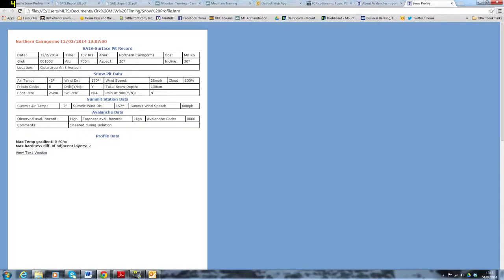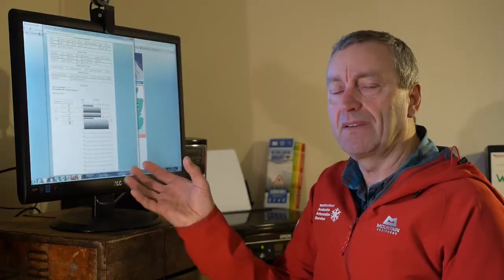The snow profiles are an important element of what we do when we're in the mountains as forecasters, but actually in terms of compiling our avalanche hazard forecast, this probably gives us about 10% to 15% of the information.